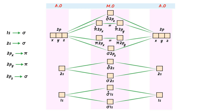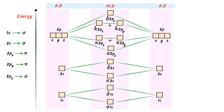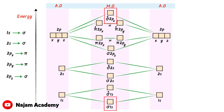Remember that the energy of the orbitals increases from the bottom to the top. Sigma 1s molecular orbital has the lowest energy, while sigma star 2pz has the highest energy.